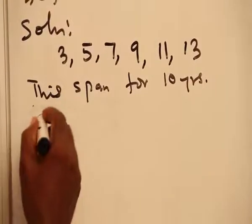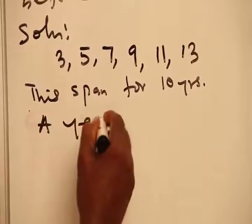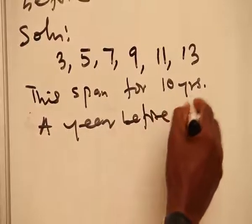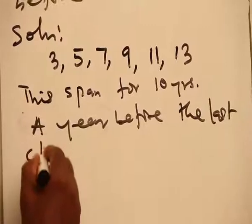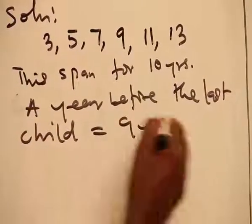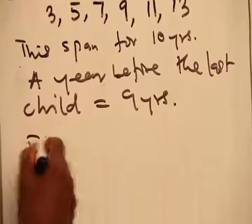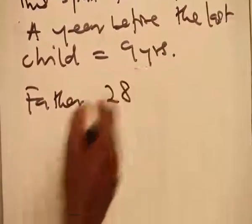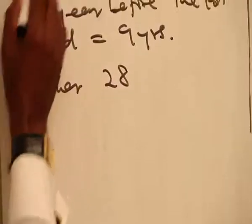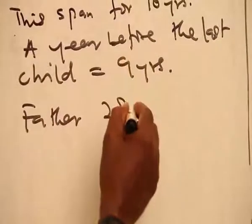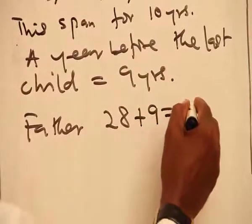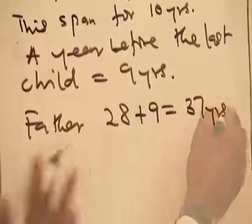Now a year before then, before the last child, is equal to 9 years. The father was actually 28 years when the first child was born. So 9 years later it would be 28 plus 9 and that is equal to 37 years.